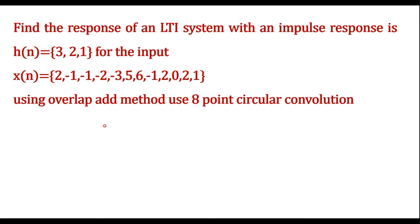In this video, let me consider one numerical on the overlap-and-add method. Find the response of an LTI system with impulse response h(n) = [3, 2, 1] for the input x(n) using the overlap-and-add method. Use 8-point circular convolution. So here it is said to use 8-point circular convolution, which means N is equal to 8.